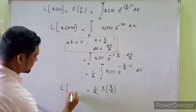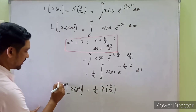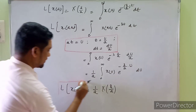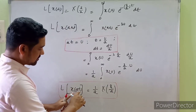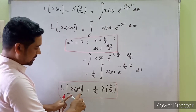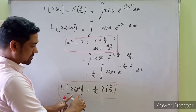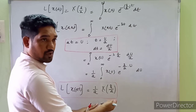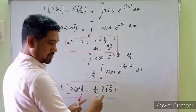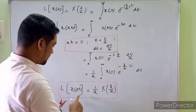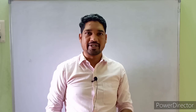So the Laplace transform of x(a*t) equals (1/a) * X(s/a). This result comes from a scaling done in the time domain, and it is known as the time scaling property of Laplace transforms. Solving many numericals becomes very easy once you are familiar with this property.